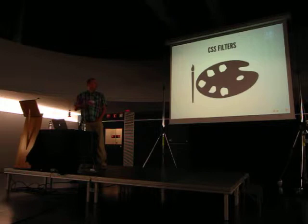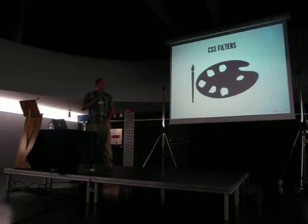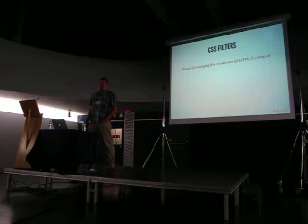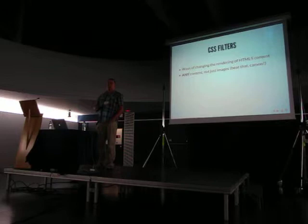First, CSS filters. CSS filters are a way of modifying the rendering of an HTML element in a way that applies not only to images, but also to actual HTML elements like div, p elements, and so on. The most important thing is that they are ways of changing the rendering of HTML content, and more importantly they apply to all content. Because if we are talking about images, Canvas offers us APIs for drawing the image on top of Canvas, and also to read pixel information from that image — and having this information you can basically create whatever effect you want.